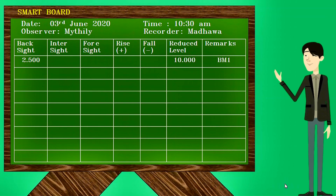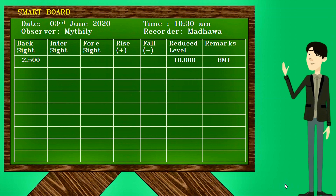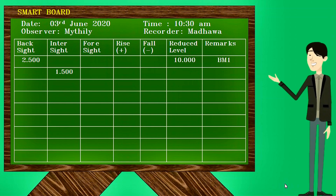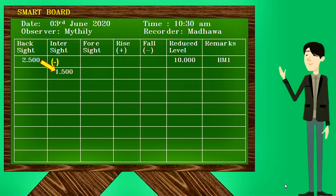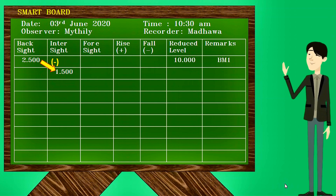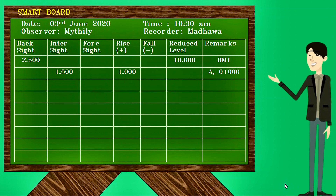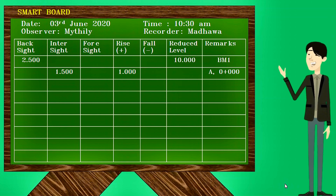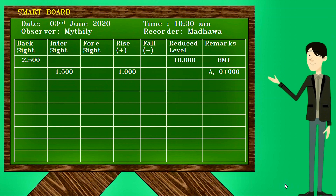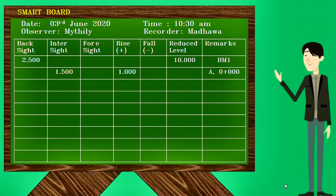We will see how to record the intermediate sight reading in the field book. Put the intermediate sight reading into the intersight column. Then deduct the intersight reading from the previous staff reading and put the value in either the rise column or the fall column. Since the reading is a plus value, put it in the rise column. The reduced level of point A is then obtained by adding the rise value to the previous reduced level.